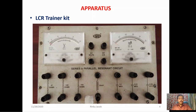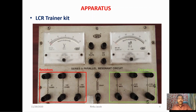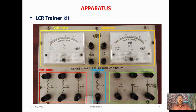The LCR trainer kit contains three different values of resistors: 47 ohm, 100 ohm, and 150 ohm; three different capacitors: 0.1 microfarad, 0.22 microfarad, and 0.33 microfarad; and one inductor of 30 millihenry. An ammeter and a voltmeter are also included in the kit, which can read AC current and AC voltage respectively.